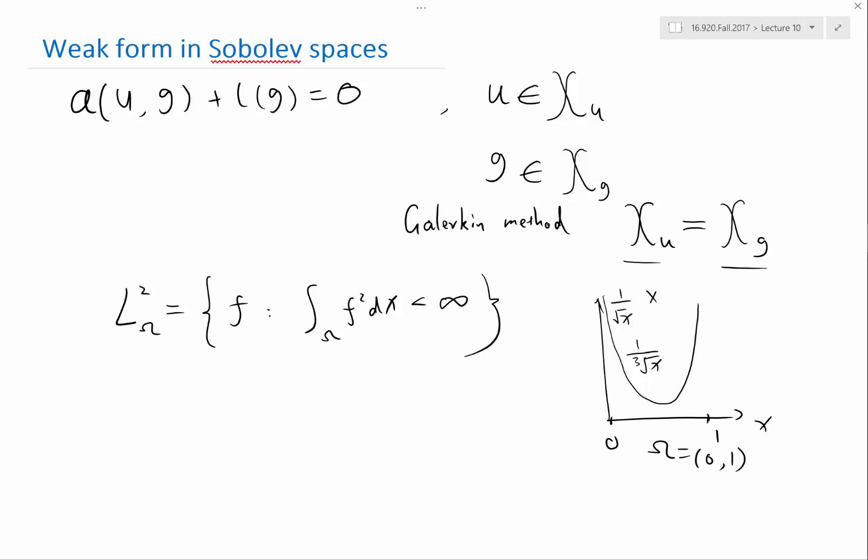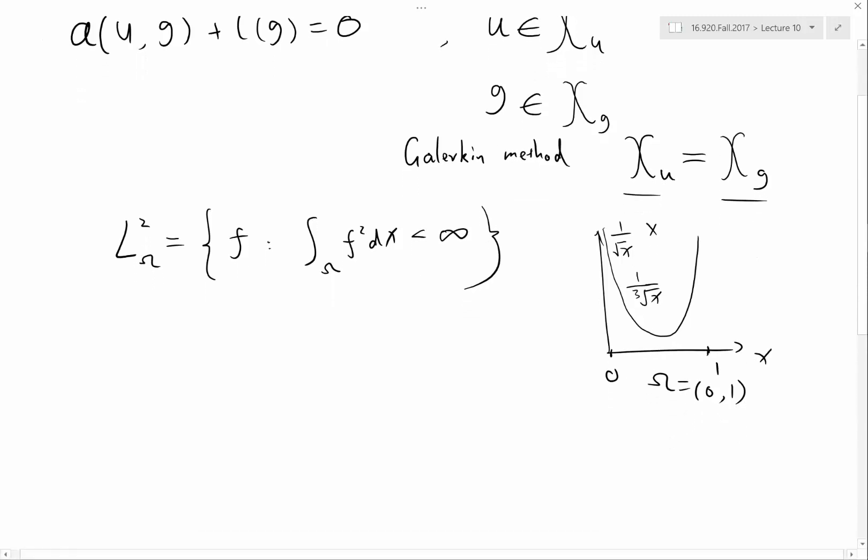And similar things happens if you have an infinite domain. If you have an infinite domain, it's actually the opposite. The faster you go to, you actually need to do a function that goes to zero sufficiently fast for the function to be in L2. So this is the simplest Sobolev space.